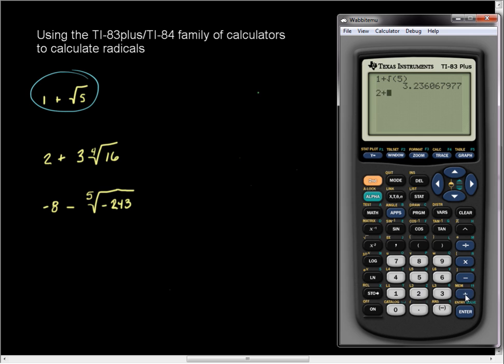It does know the order of operations. So, 2 plus, and I'm going to put 3 times, and in parentheses, I'm going to put my radical. I'm going to force it to do it first. I'll show you, it doesn't matter later. I'll do this again. So 2 plus 3 times, to enter the fourth root, first you place the index, 4...